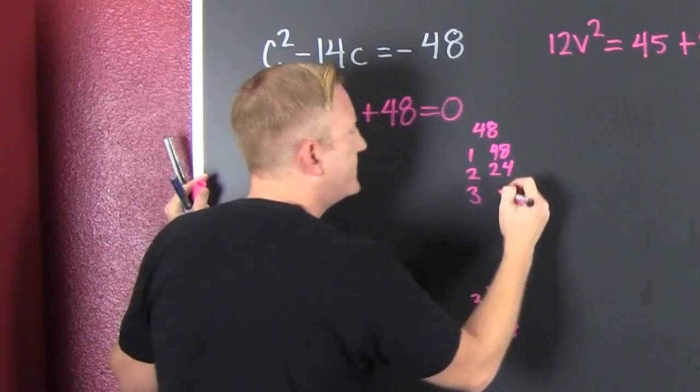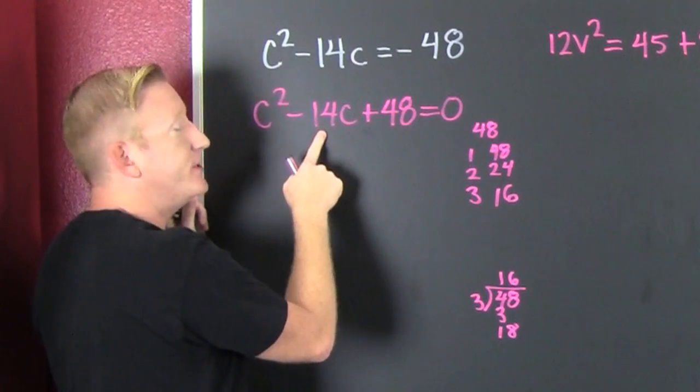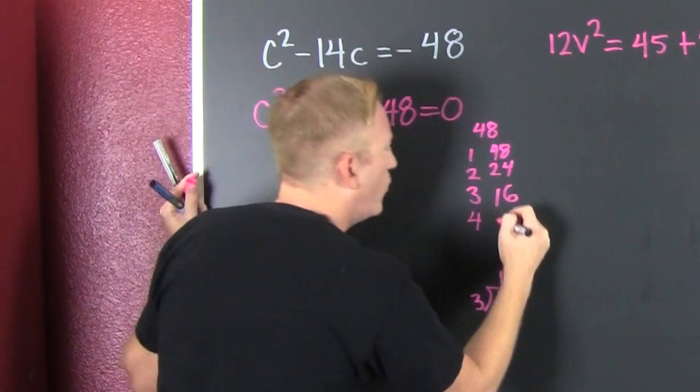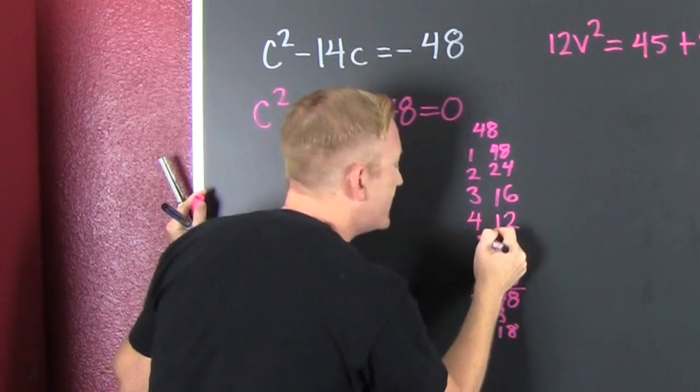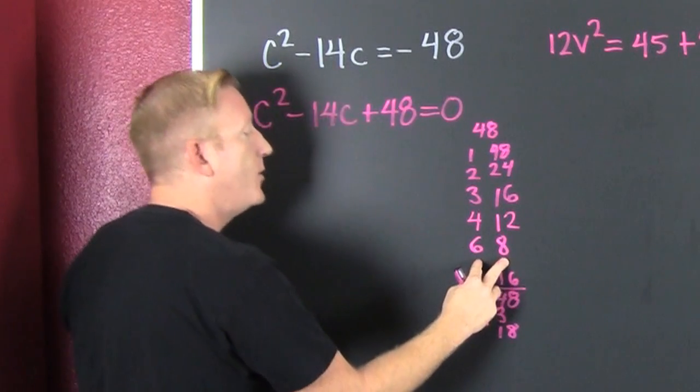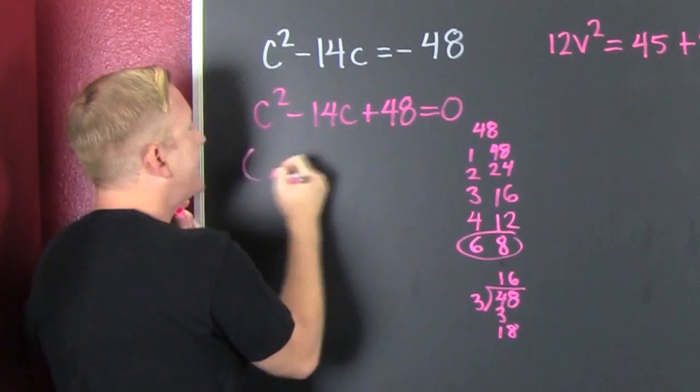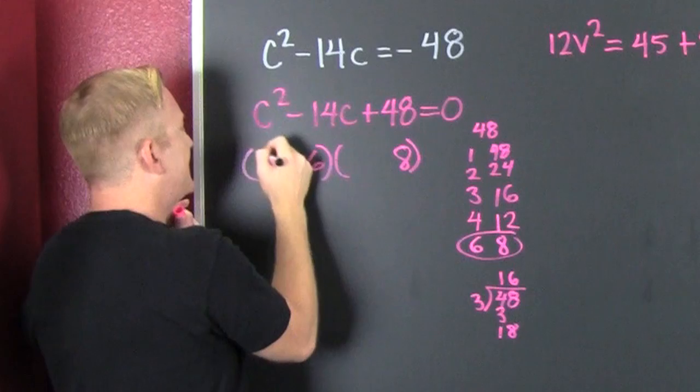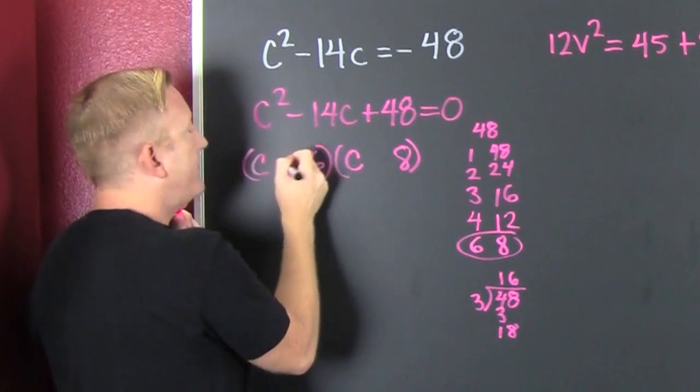Do any of those add to be 14? No, keep going. So then that's 4 and 12, add yet? No. 5 doesn't go, 6 does, 6 and 8 is 48. And look, we have some that add to be 14. So you gotta get that 8 and 6, c and c.